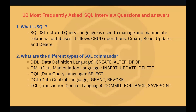The next one is TCL — Transaction Control Language. TCL commands are used to manage database transactions. For example, we have COMMIT, ROLLBACK, and SAVEPOINT. COMMIT saves all changes made in the current transaction permanently. ROLLBACK undoes the changes in the current transaction. SAVEPOINT is used to set a save point within a transaction for partial rollbacks.